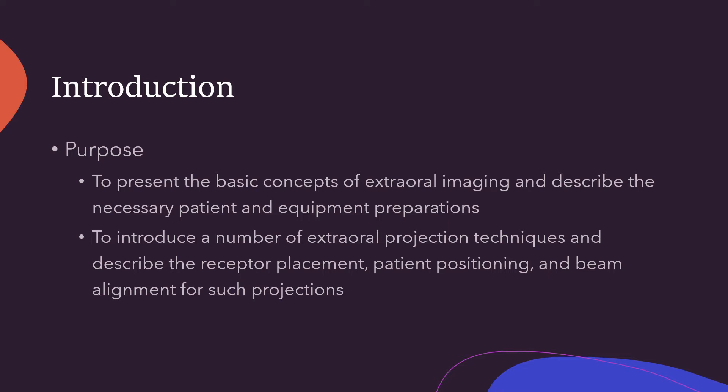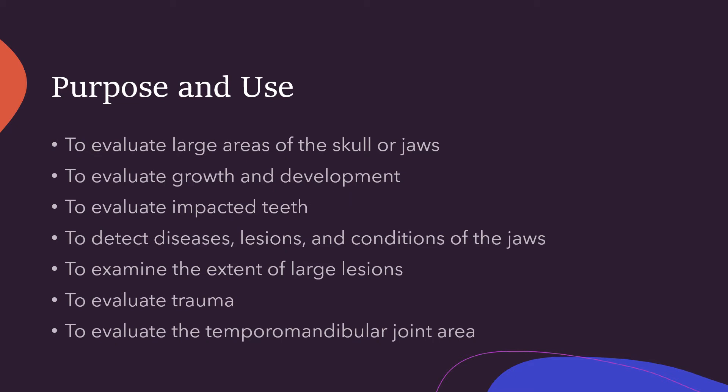The purpose of this chapter is to expose you to some of this information, presenting the basic concepts of these extra oral images and introducing a number of extra oral projection techniques. The purpose and use of each of these images is to evaluate large areas of the skull or jaws, to evaluate growth and development, to evaluate impacted teeth, to detect diseases, lesions, and conditions of the jaw, to examine the extent of large lesions, to evaluate trauma, and to evaluate the temporomandibular joint area. Everything except that last one is also done with the panoramic image.